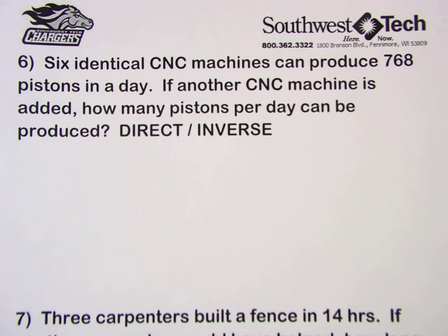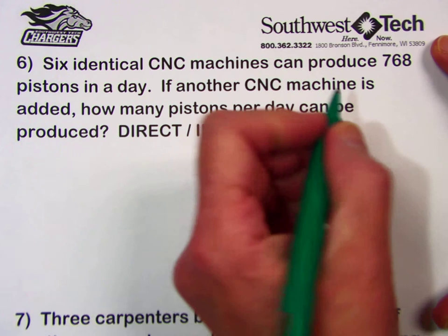Number 6. Six identical CNC machines can produce 768 pistons in a day. If another CNC machine is added, how many pistons per day can be produced?